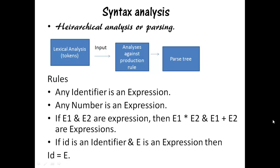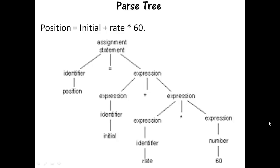Consider the rules we are going to apply to the above statement. Any identifier is an expression. Any number is an expression. If E1 and E2 are expressions, then E1 * E2 and E1 + E2 are expressions. If id is an identifier and E is an expression, then identifier = expression is valid. The statement position = initial + rate * 60 is represented in a parse tree in a hierarchical manner.